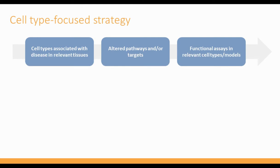One of the additional approaches we can take with single-cell RNA-seq is a cell-type focused strategy. Instead of directly trying to identify genes that are changing in disease, we first try to identify the cell types that are changing in disease. Once we've identified those cell types, we can look within each one individually for altered pathways and targets between healthy and disease, then prioritize within those pathways. This sets us up well for functional assays and validation.